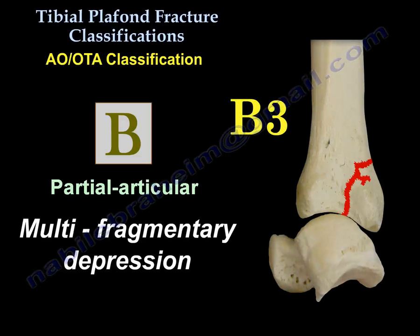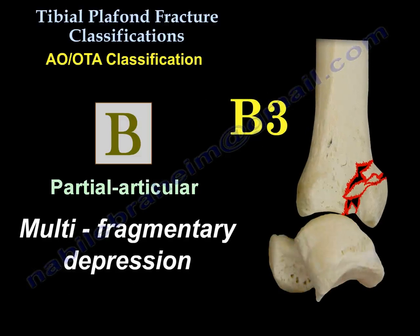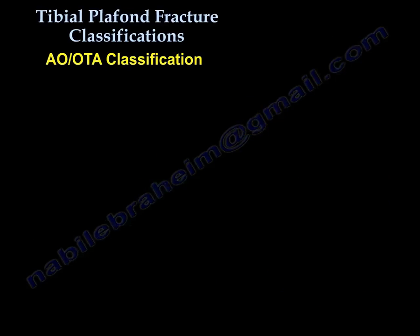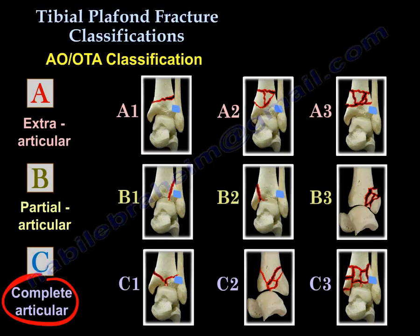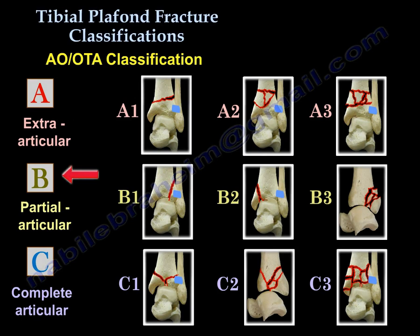The B3 fracture in partial articular is a multi-fragmentary depression fracture — not a single piece but multiple pieces. The C fracture is a complete articular fracture. So you progress from A (extraarticular), to B (partial articular), to C, which is complete joint involvement.